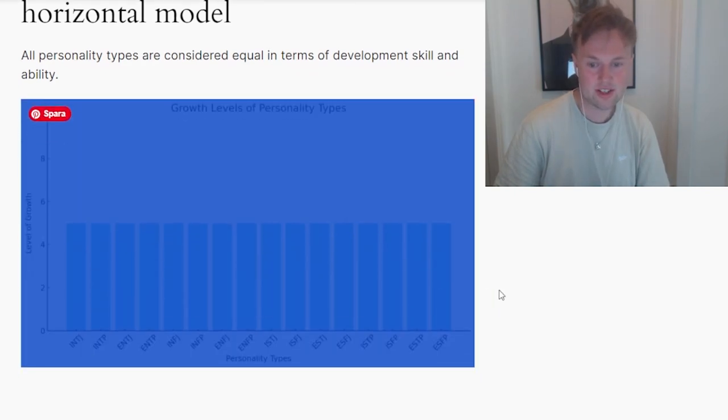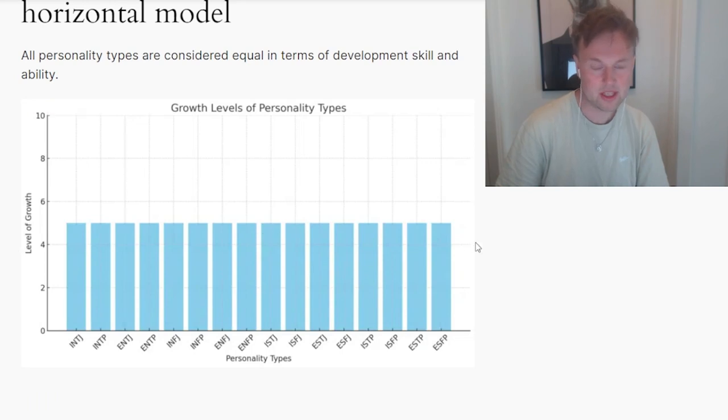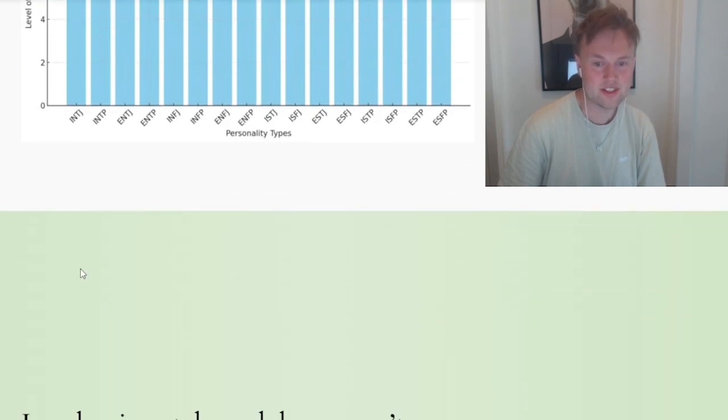So here we see all the 16 personality types, all of them are in the middle, none is better or worse than others. None has achieved a higher level of growth or a lower level of growth. They're all the same.